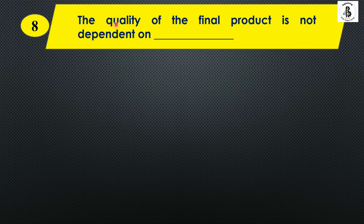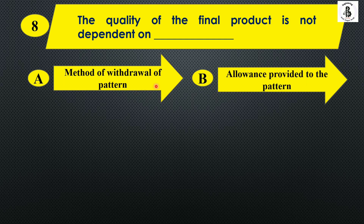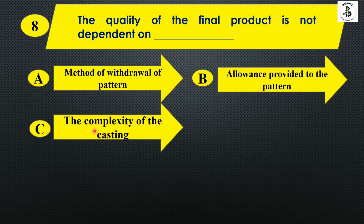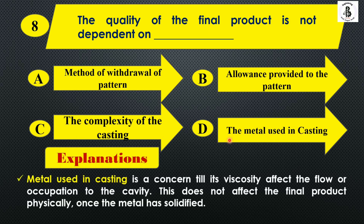The quality of the final product is not dependent on which of the following? Option A: method of withdrawal of the pattern, Option B: allowance provided to the pattern, Option C: the complexity of the castings, and Option D: the metal used into the castings. The metal used in castings is only a concern with respect to its velocity affecting flow into the cavity — it does not affect the final product physically once the metal has solidified. So the right answer is Option D.